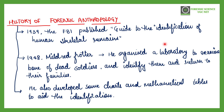The history of forensic anthropology starts in 1939, when the FBI published a guide to the identification of human skeletal remains. This was the first major interaction of anthropology in forensic science — the first time anthropology was used in the forensic domain.